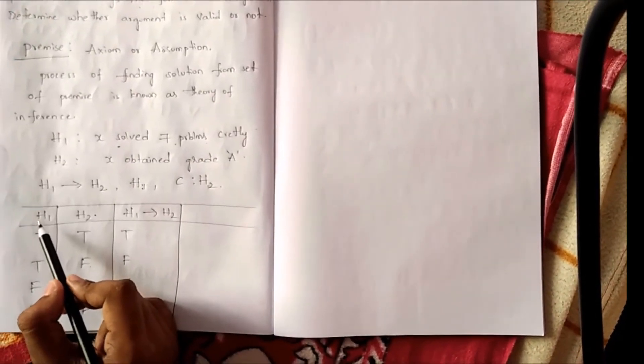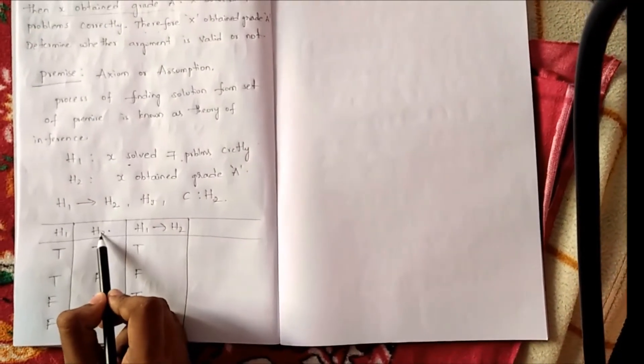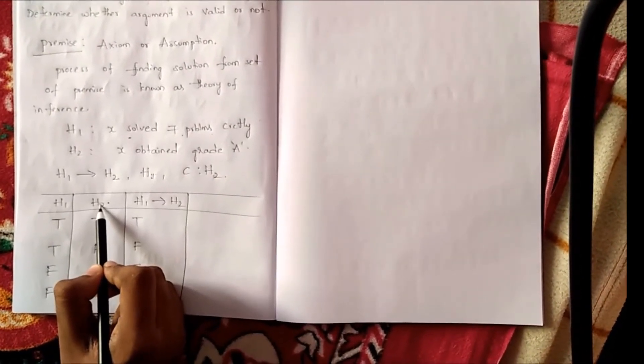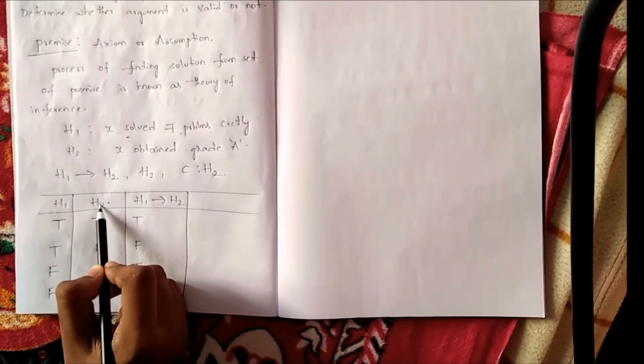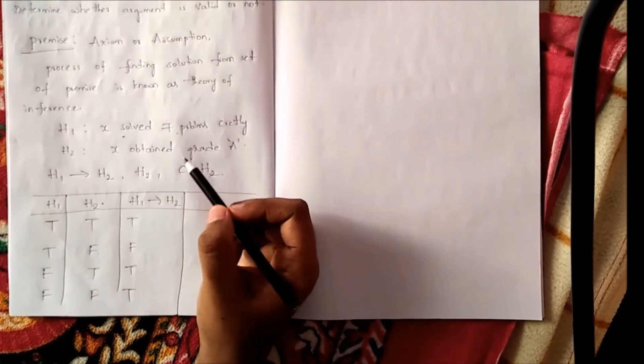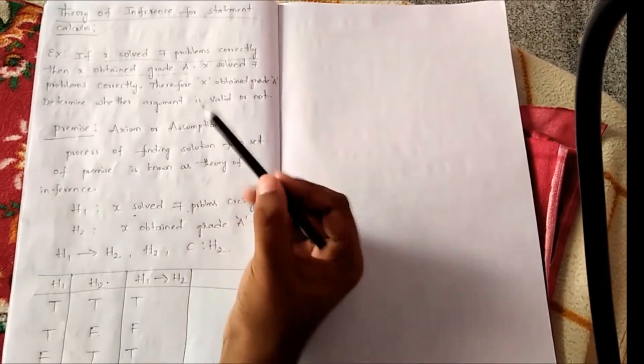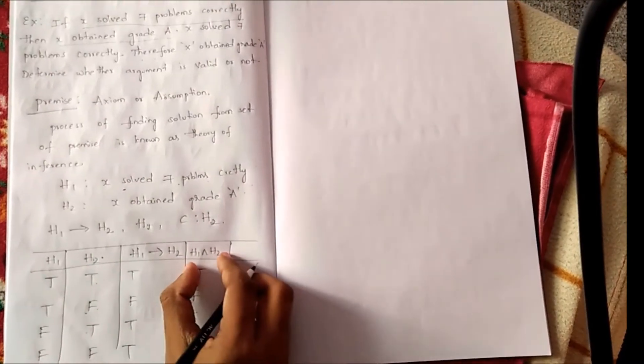Now, if we do H1 and H2, our conclusion is true. We know what we say is that the theory of inference is satisfied. That means the argument is valid. We will do H1 and H2. True, true, true. True, false means false, false, false. This is the conclusion.